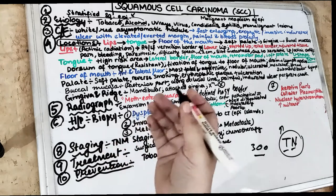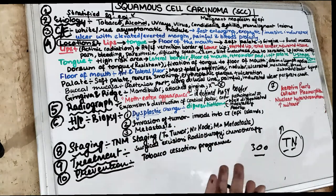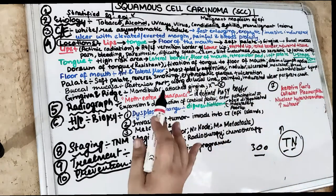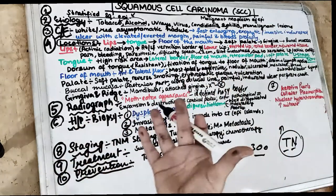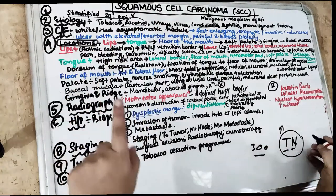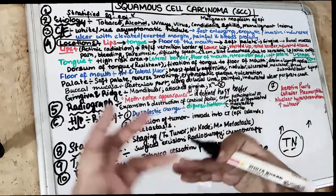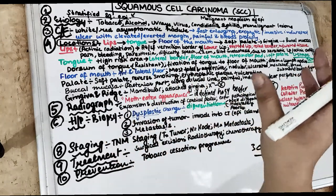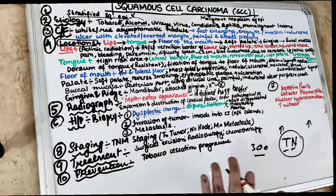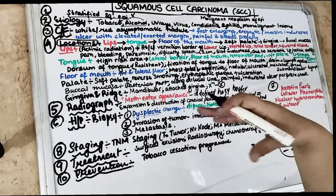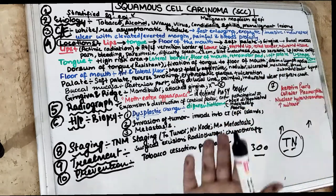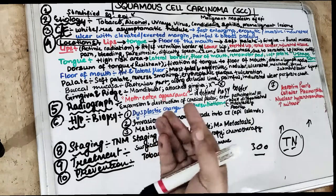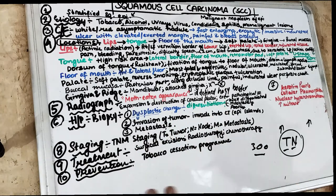Talking about human papillomavirus, HSV, Epstein-Barr virus, and HIV virus — all these viruses are associated. Also, some conditions like candidiasis — specifically the chronic hyperplastic type of candidiasis, where tissue keeps multiplying — have the potential for malignancy. Syphilis also: there is a syphilitic correlation between syphilitic glossitis and oral cancer. Additionally, premalignant lesions such as OSMF, erythroplakia, lichen planus, and leukoplakia can cause cancer.